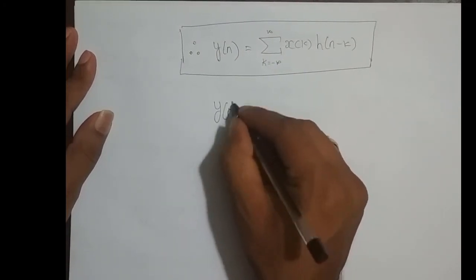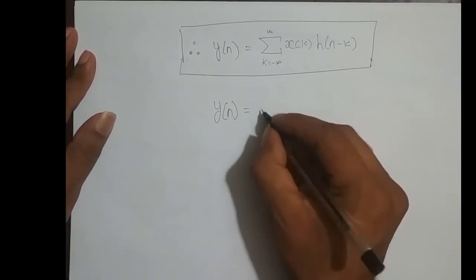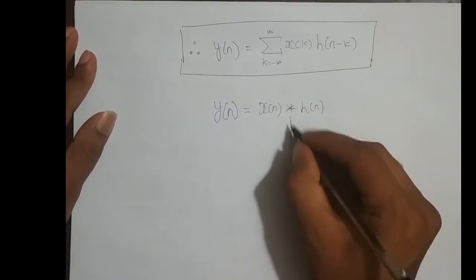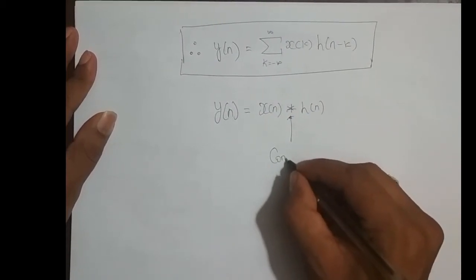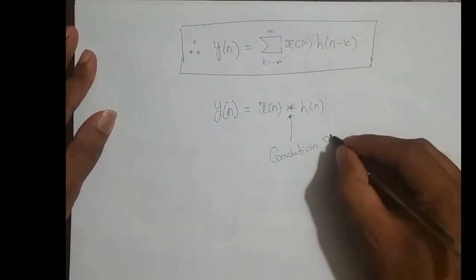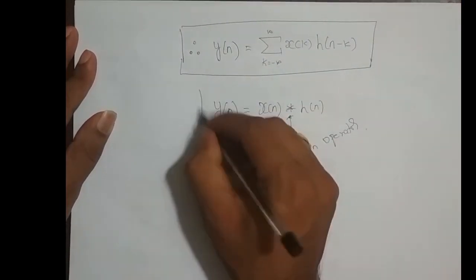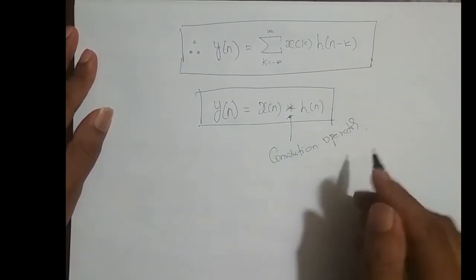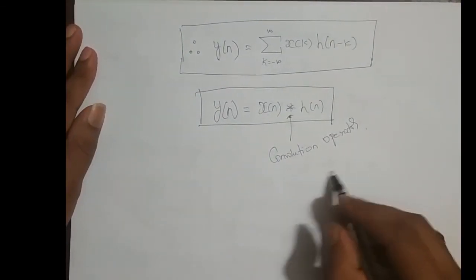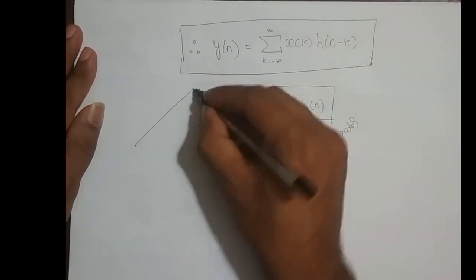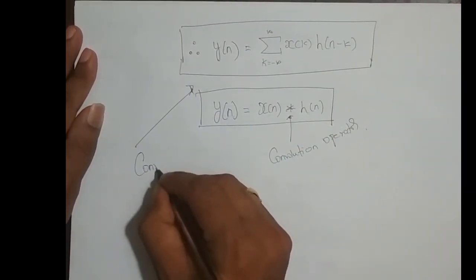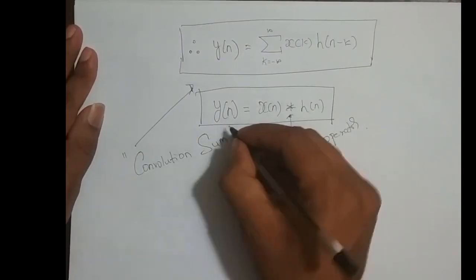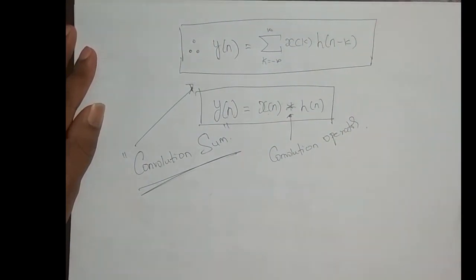In short, we can also write this as Y[n] = X[n] * H[n], where the star symbol is the convolution operator. Whenever I say some sequence star some other sequence, it means convolution. This equation is called the convolution sum because this is the output of a discrete-time system.